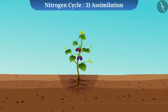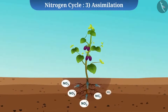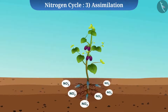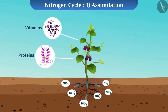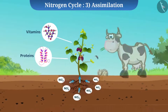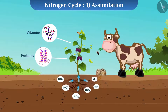The next stage is assimilation. Plants absorb the usable form of nitrogen from the soil with the help of their roots and use it for the formation of proteins and other essential compounds. Through the food web, nitrogen is transported to other animals.